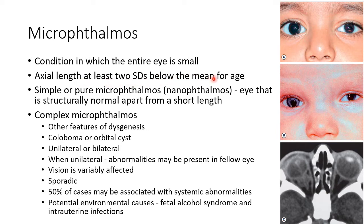There are 2 types of microophthalmos. The first one is simple or pure microophthalmos, which is also known as nanophthalmos, and the second one is complex microophthalmos. In case of simple microophthalmos, it refers to an eye that is structurally normal apart from a short length. This picture shows simple microophthalmos of the left eye.